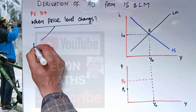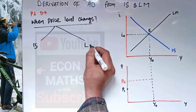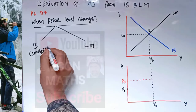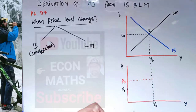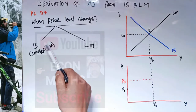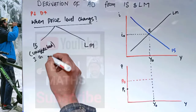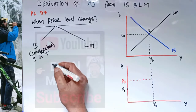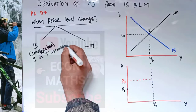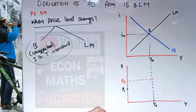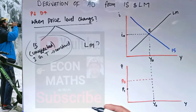Regarding the effect of a change in price level on the IS curve: the IS curve will remain unaffected. There will be no change in the IS curve because the change in price level does not affect it at all — its components such as investment, government spending, and tax rates are assumed to be constant. So a change in price level causes no effect on the IS curve.